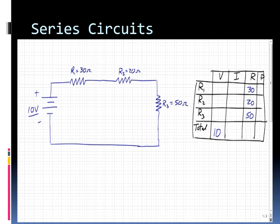If I know any two things in a row I can always figure out the other two. But at this point I don't have two things in any one row so I need to figure something else out. What am I going to do? Well I can figure out the equivalent total resistance for a series circuit. On my reference table I can see that the equivalent resistance is R1 plus R2 plus R3 which is going to be 30 plus 20 plus 50 or 100 ohms. Now I know two things in that total row. Therefore I can calculate the other two.